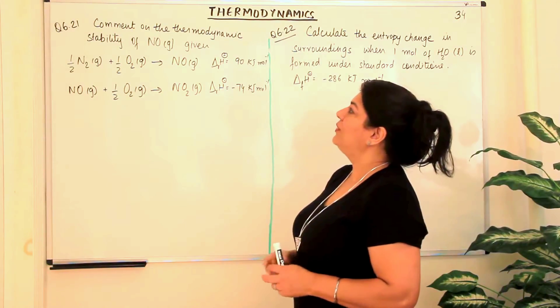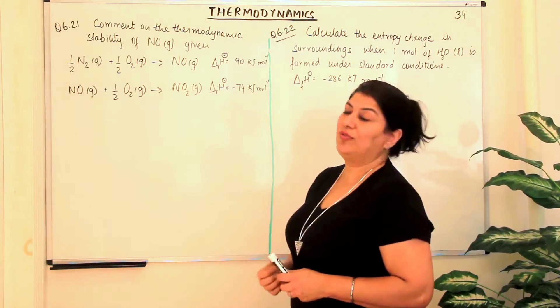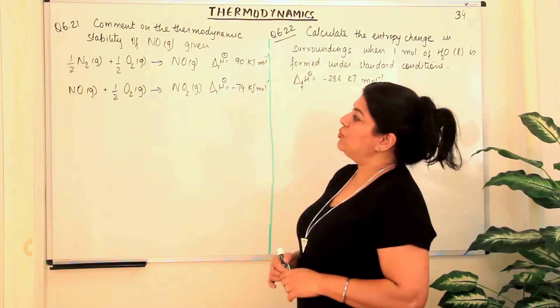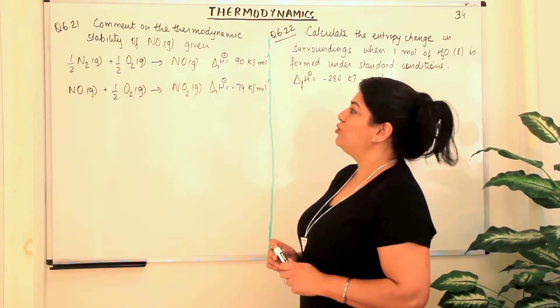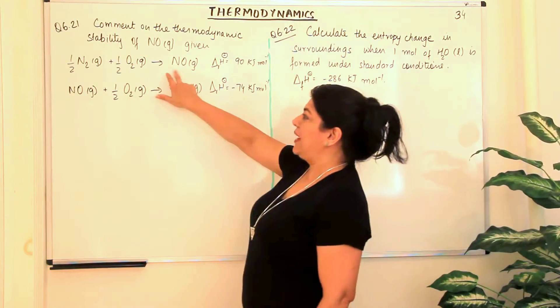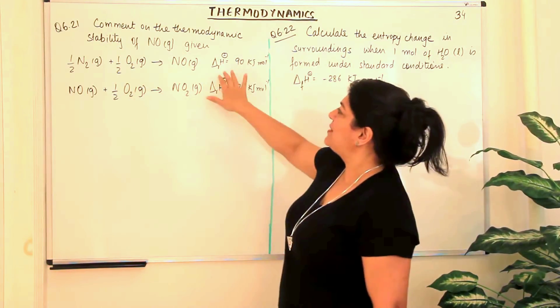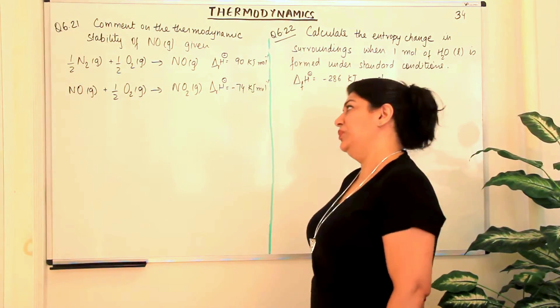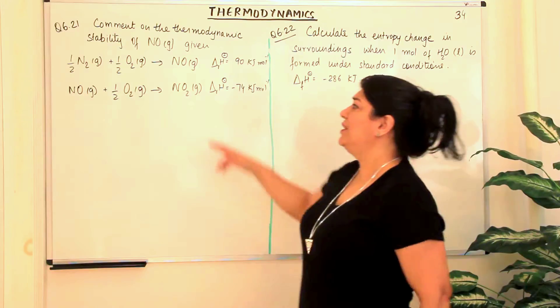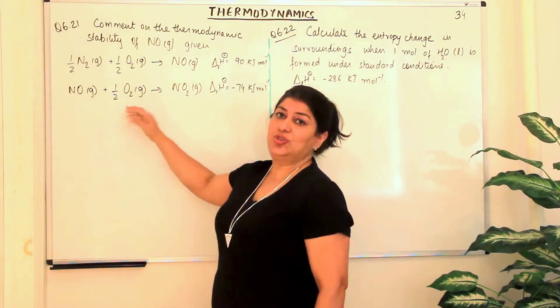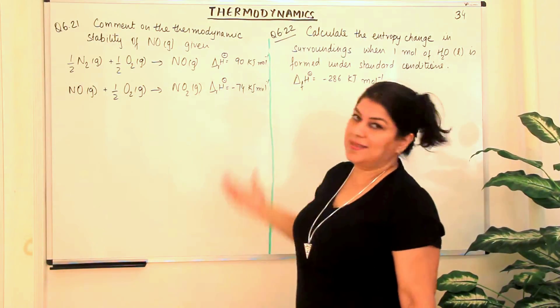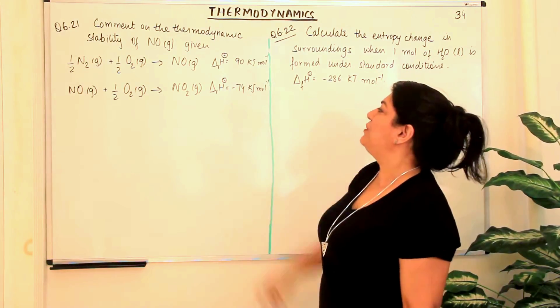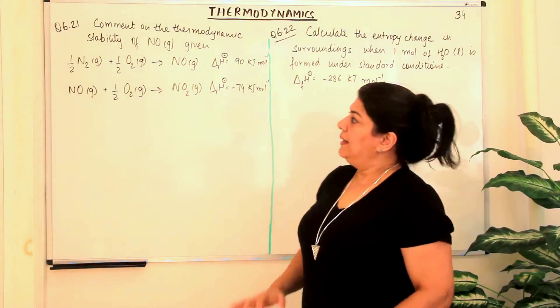The question reads: comment on the thermodynamic stability of NO gas given the equations. Half N2 plus half O2 gives you NO gas, all gaseous reactants and products. The enthalpy of this reaction is 90 kJ per mole. In the next reaction, NO reacts with oxygen to give you NO2, again gaseous reactants and products, but the enthalpy of this reaction is minus 74 kJ per mole.